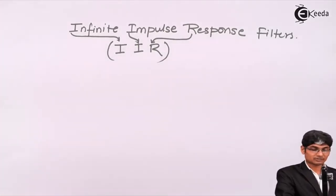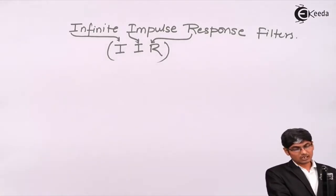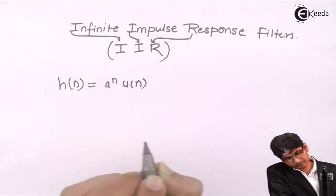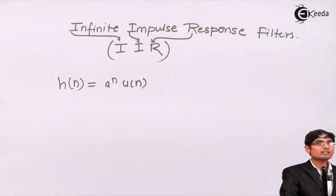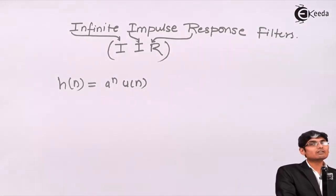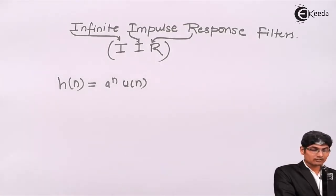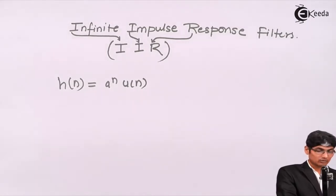As the name itself suggests, the impulse response of IIR filters will be infinite. For example, if h(n) = a^n · u(n), this filter response is infinite because as n increases, if a is greater than 1 the function takes infinite values, and if a is less than 1 — say 0.1 or 0.2 — the function decreases but takes a very large number of n values to reach zero.